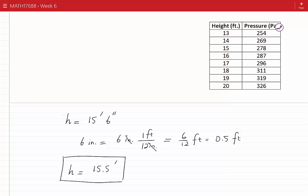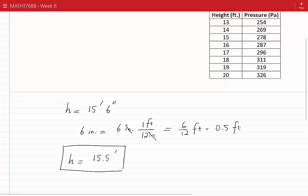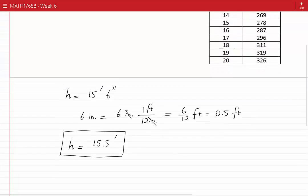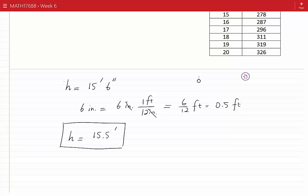Now let's look at the table of height versus pressure. We note that 15.5 is between 15 and 16. When the height is 15 feet, the pressure is measured to be 278 Pascals. When the height is 16 feet, the pressure is measured to be 287 Pascals.